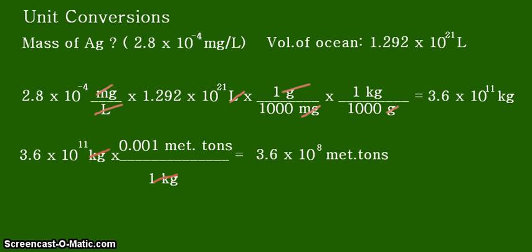The mass of the silver ions in the ocean is 3.6 times 10 to the 11 kilograms, which is equal to 3.6 times 10 to the 8 metric tons. That is all for this video. Thank you for listening and continue learning.